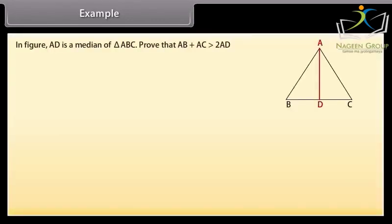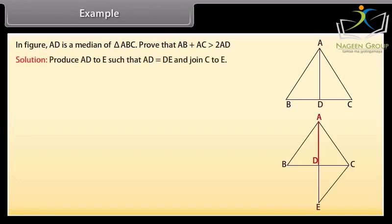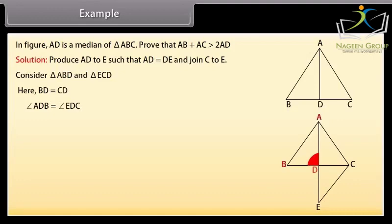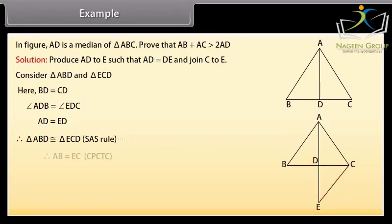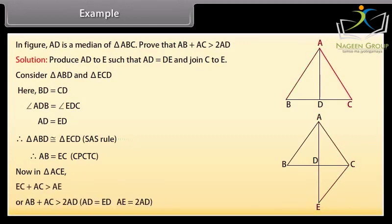Example: in the figure, AD is a median of triangle ABC. Prove that AB plus AC is greater than 2AD. Solution: produce AD to E such that AD is equal to DE and join C to E. Consider triangle ABD and triangle ECD. Here BD is equal to CD, angle ADB is equal to angle EDC, and AD is equal to ED. Therefore, by SAS congruence rule, triangle ABD is congruent to triangle ECD. Therefore, AB is equal to EC — CPCTC. Now, in triangle ACE, EC plus AC is greater than AE, which gives AB plus AC is greater than 2AD because AD equals DE implies AE equals 2AD.